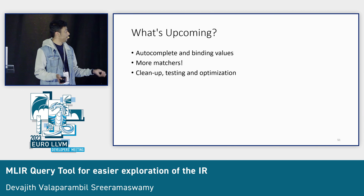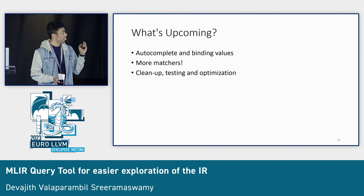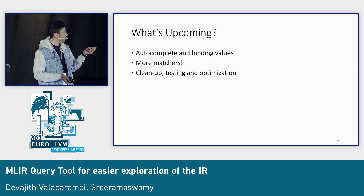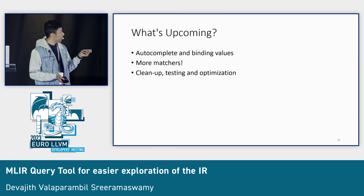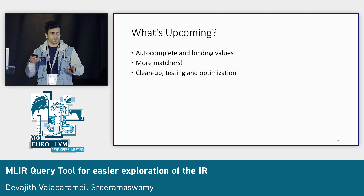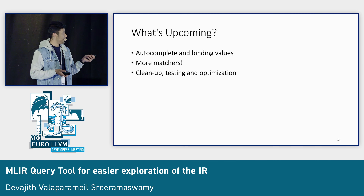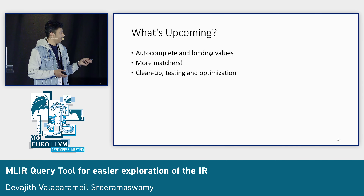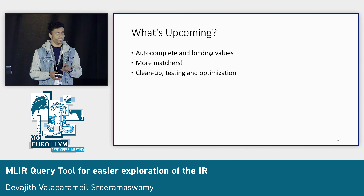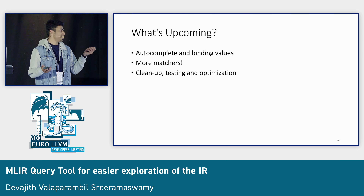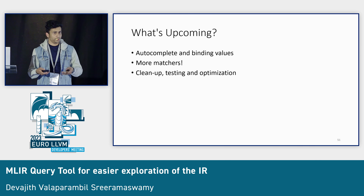What's upcoming? I got accepted to Google Summer of Code this year. The work I'll be doing will be part of GSoC. There needs to be autocomplete, binding values, history — all the features Clang Query already has. Then there need to be more and more matchers to support all possible queries. Currently the code is not very clean — I have debug prints everywhere — so I need to clean it up, add some test cases, and optimize. After all that, the aim is to send a patch upstream.